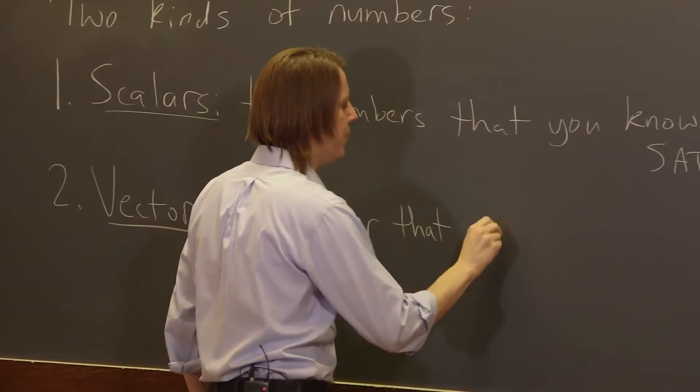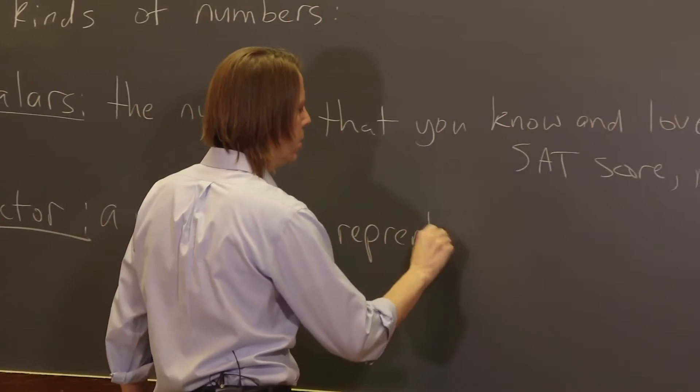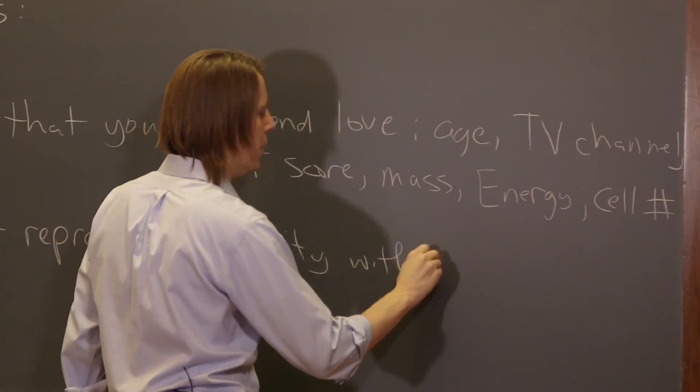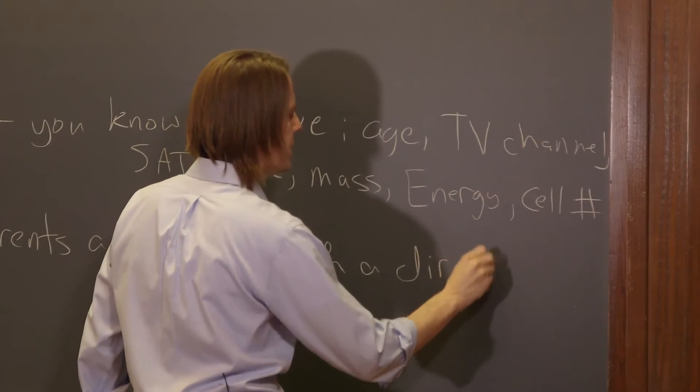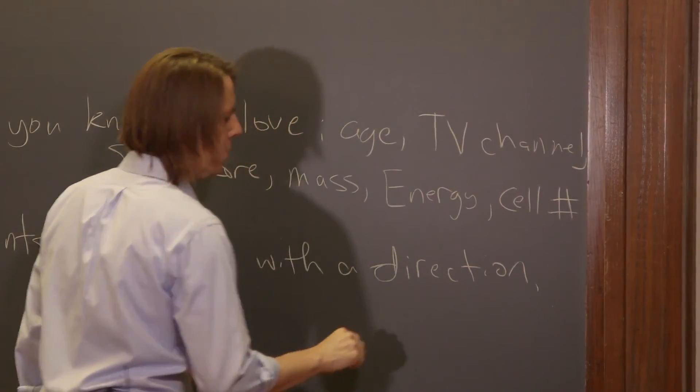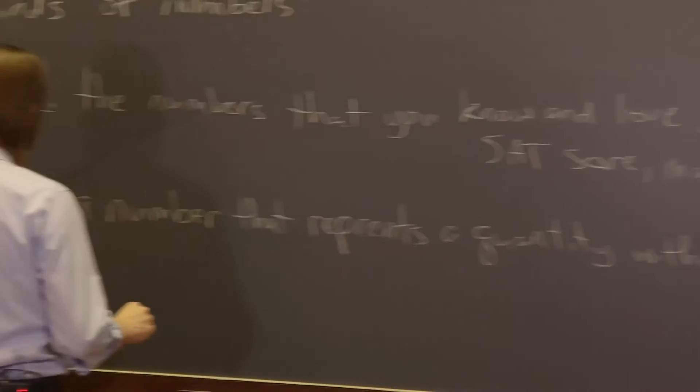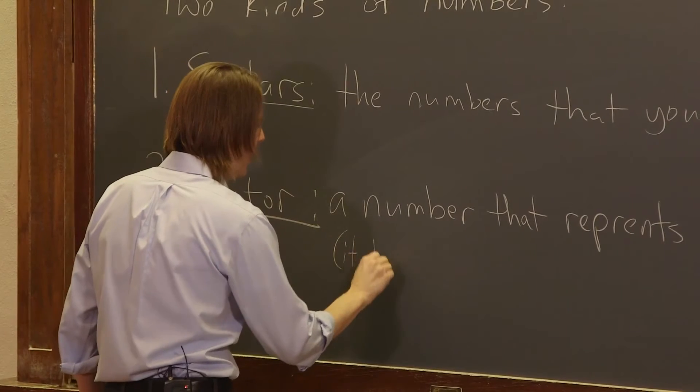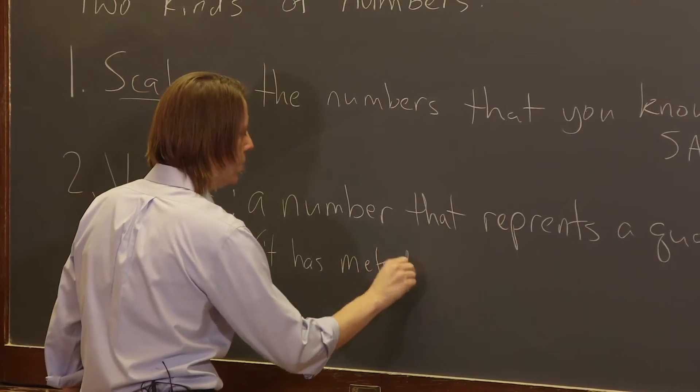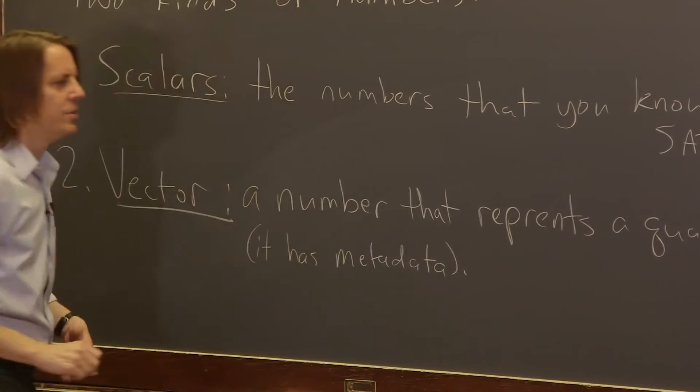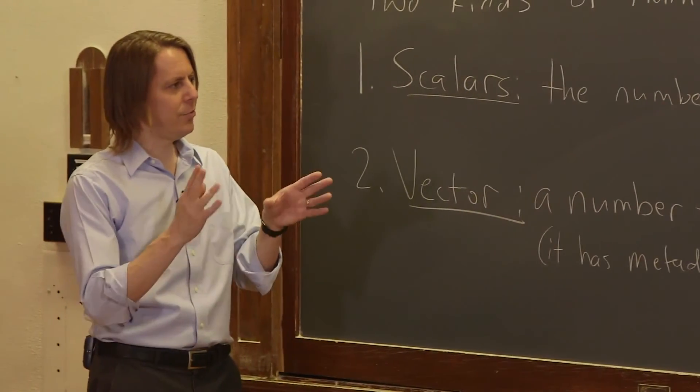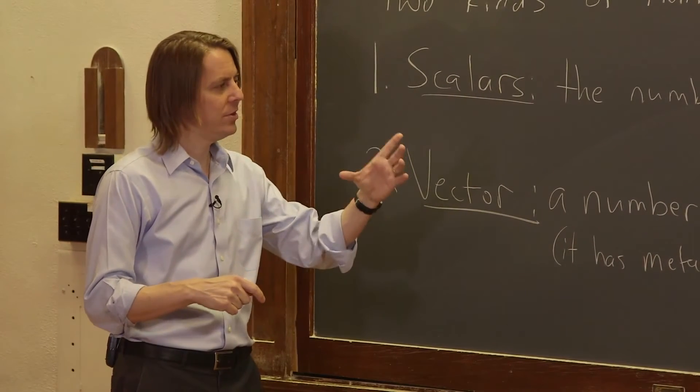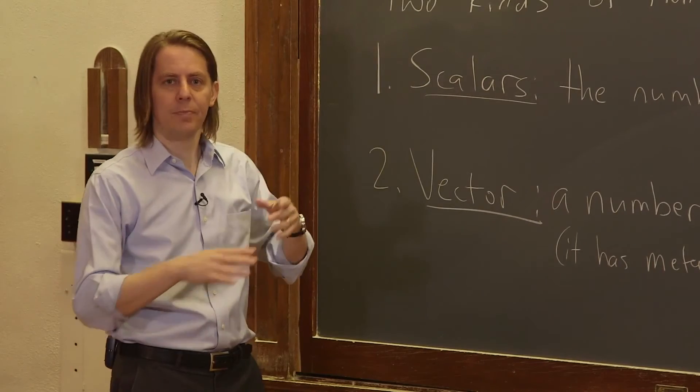That represents a quantity with a direction. Okay, and I'll add in parentheses, it has metadata, is a way to think of it. It's not just the number, it's the number and the direction. It actually takes two numbers to specify a vector: one pretty much represents the amount, the size, and one represents the direction, although there's a few different ways to give those two numbers.